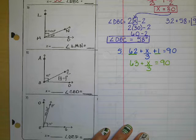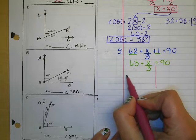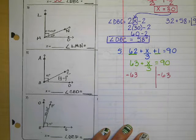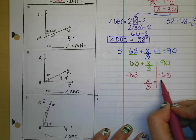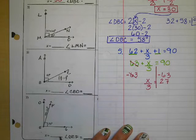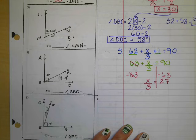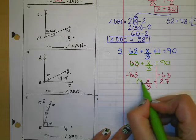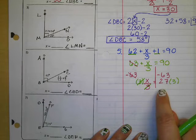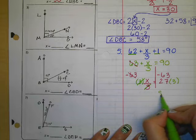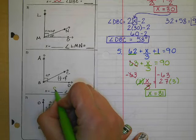Now we have a two-step equation. It has a fraction, but we don't need to freak out — we can solve it the same way. We're going to subtract 63 from both sides; those cancel out, leaving x divided by 3 equal to 27. To get rid of this fraction, the divide by 3, we do the opposite and multiply by 3 on both sides. When we multiply by 3, we end up getting 81. So x is equal to 81.